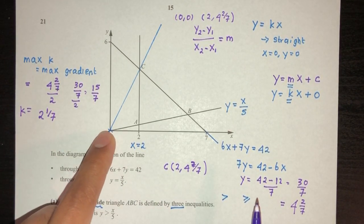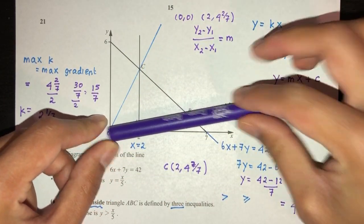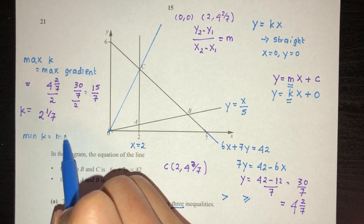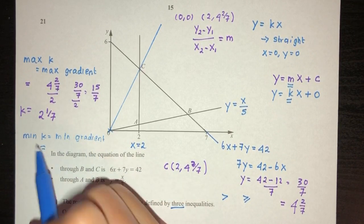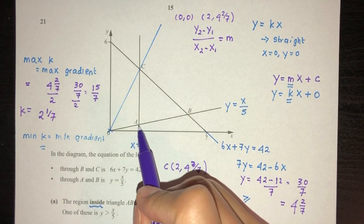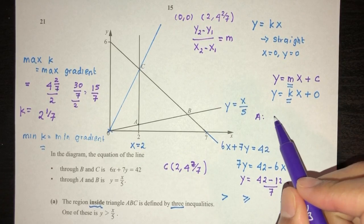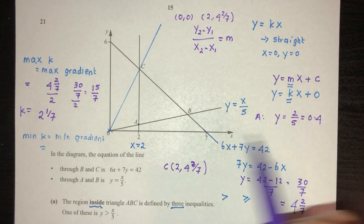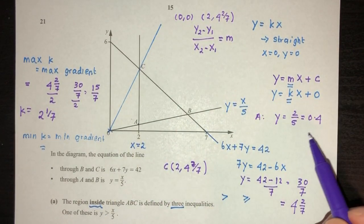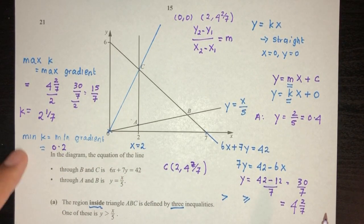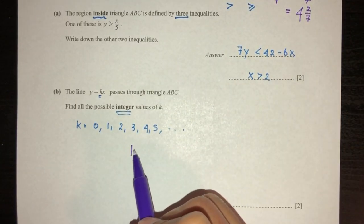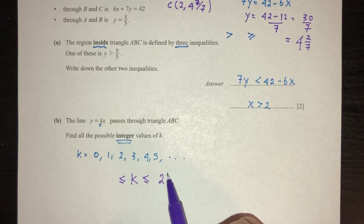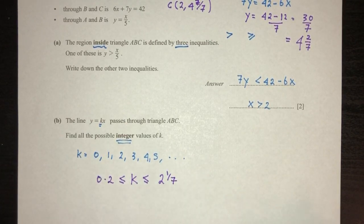The minimum value of k corresponds to the line OA. Point A is on x equals 2 and y equals x over 5, so when x is 2, y is 2 divided by 5 which equals 0.4. Using height divided by base for the gradient: 0.4 divided by 2 gives 0.2. So the minimum gradient is 0.2, meaning k is between 0.2 and 2 and 1/7.